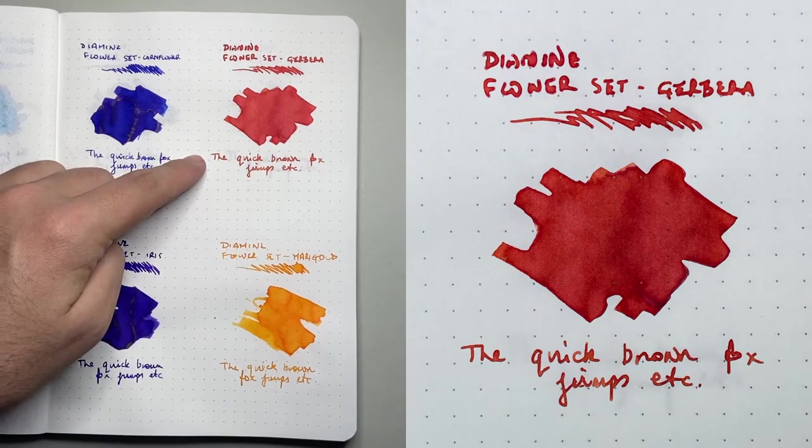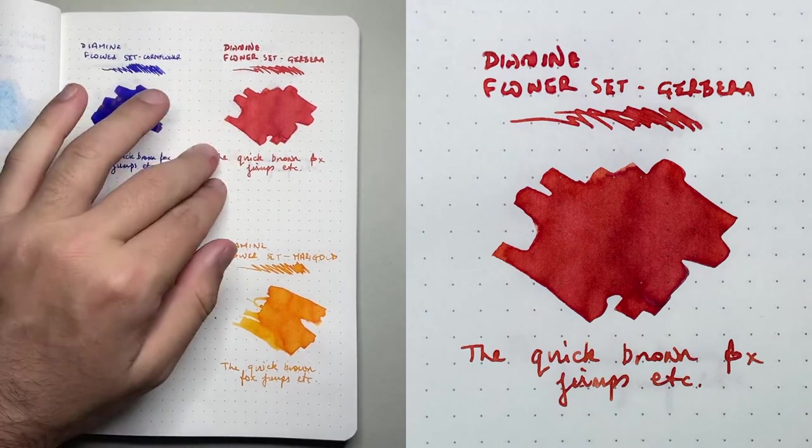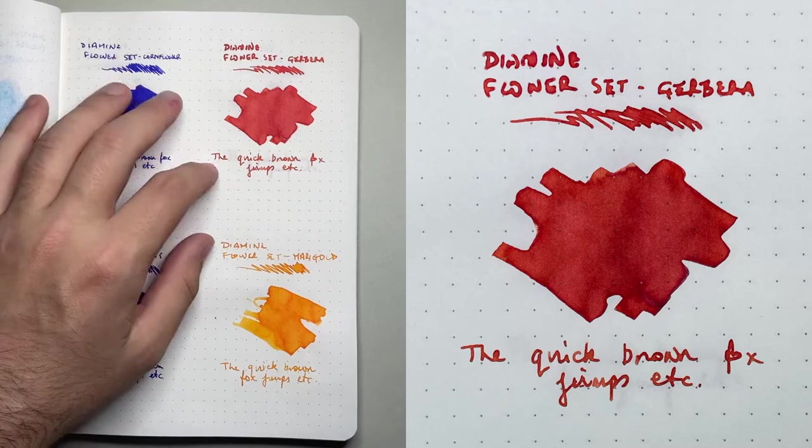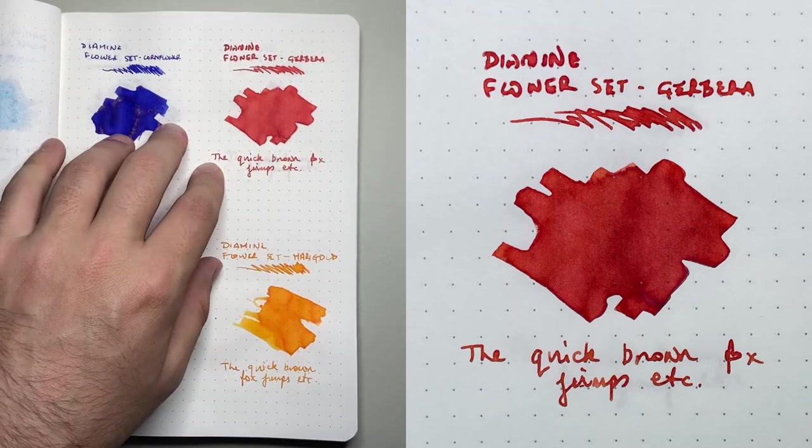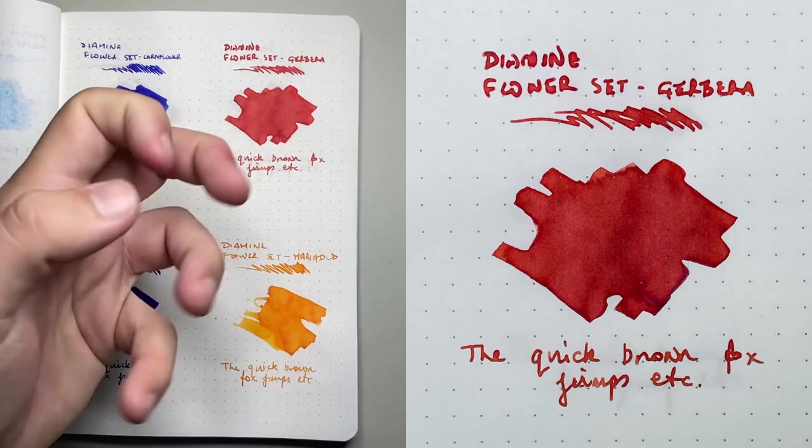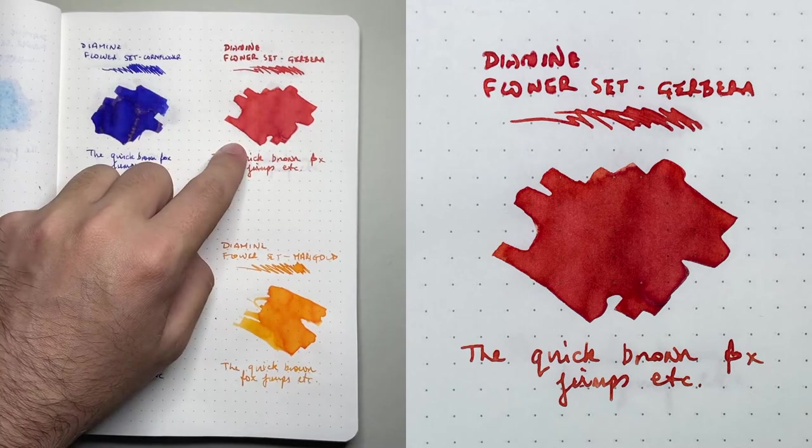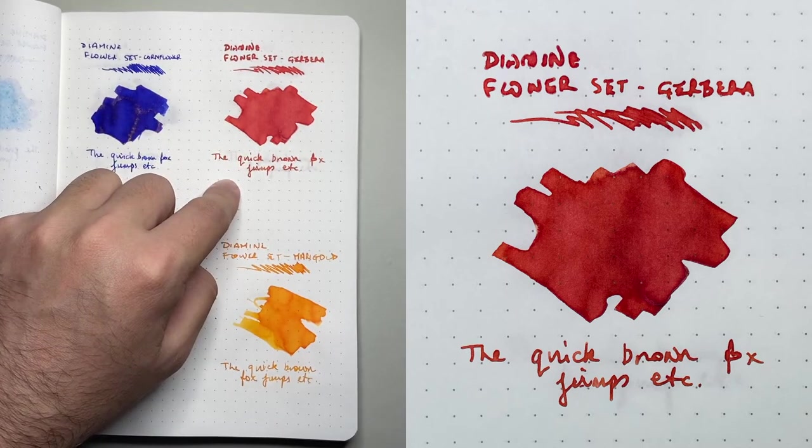Then we have Gerbera, which is orange. Once again there's a couple of these colors are quite nice and dusty. It's got a sort of dusty overtone to it. It's not a vibrant orange, which I really like. It's sort of got some nice depth to it there.